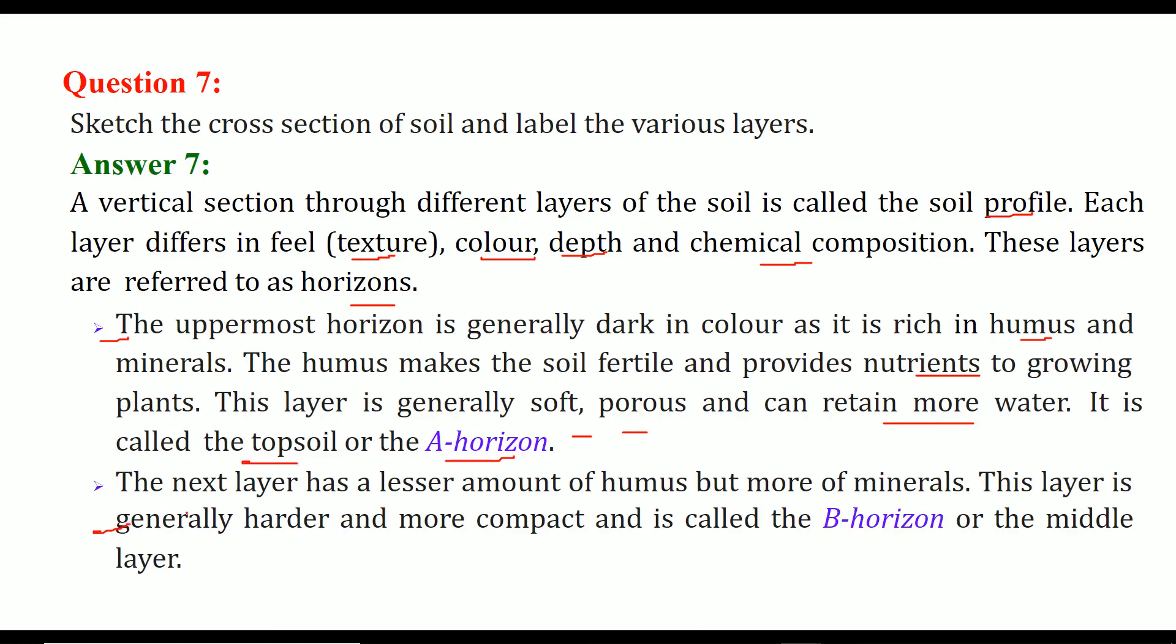Then the next one. The next layer has lesser amount of humus but more minerals. So this layer is rather more hard and more compact, we call it as B horizon or middle layer.